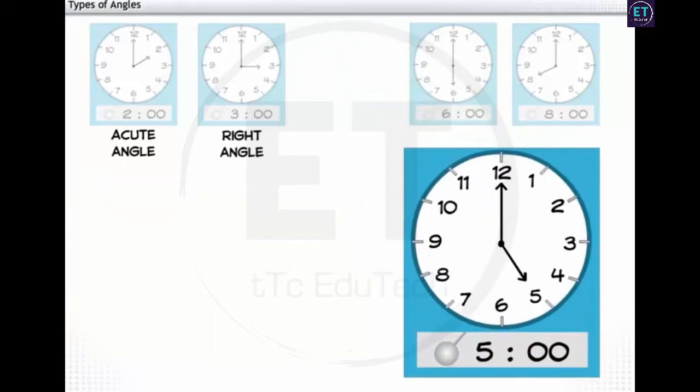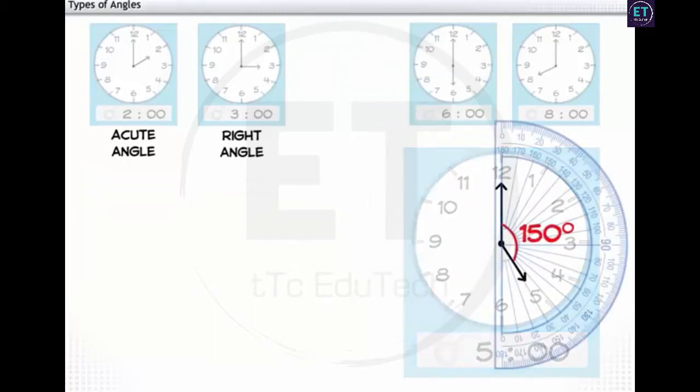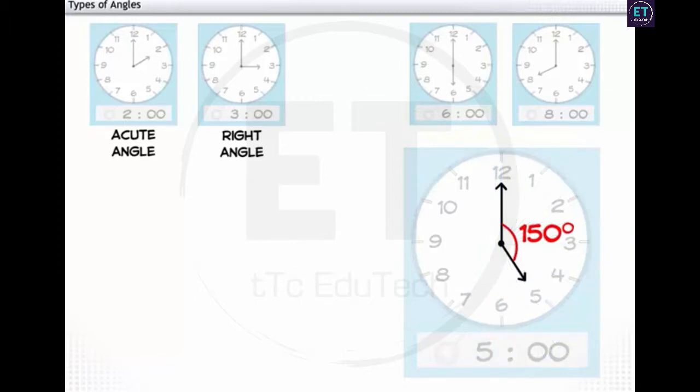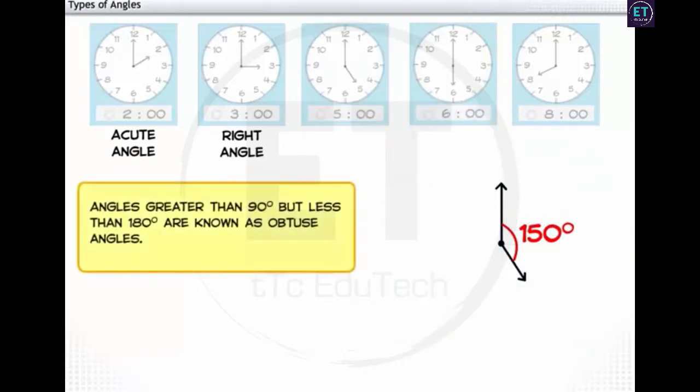Similarly, at 5, the angle formed is 150 degrees. Angles greater than 90 degrees but less than 180 degrees are known as obtuse angles.